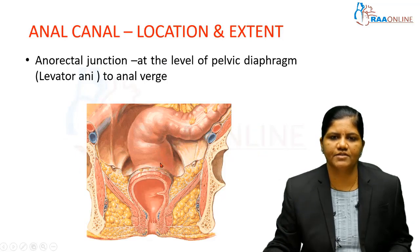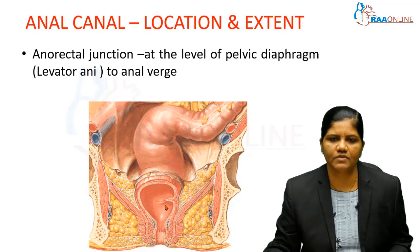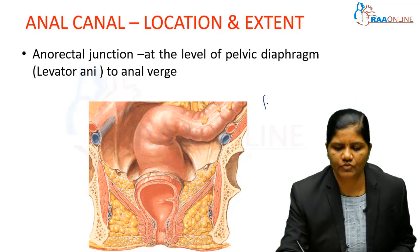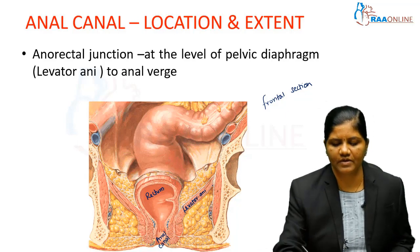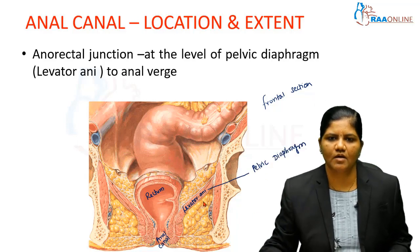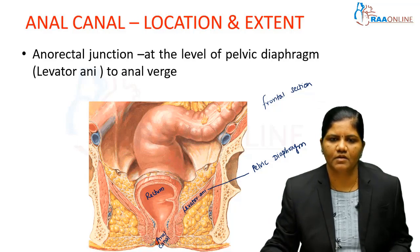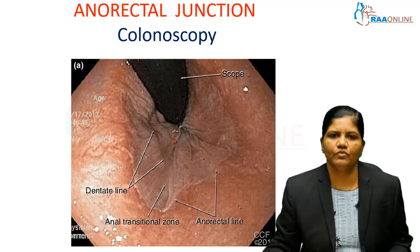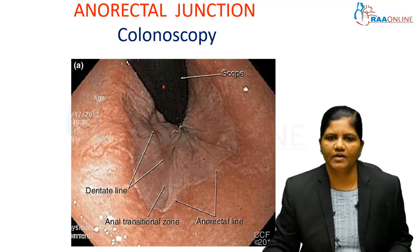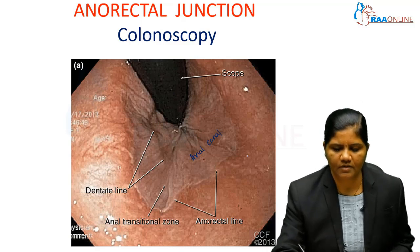This picture shows the frontal section of the rectum as well as the anal canal. The sigmoid colon continues as the rectum. This is the anorectal junction, which is continuous as the anal canal. The levator ani muscle forms the pelvic diaphragm — the rectum is present above it and the anal canal is present below. The lowermost opening is known as the anal verge. This colonoscopic view shows the anorectal junction, with the rectum above and the anal canal viewed from the lower aspect.